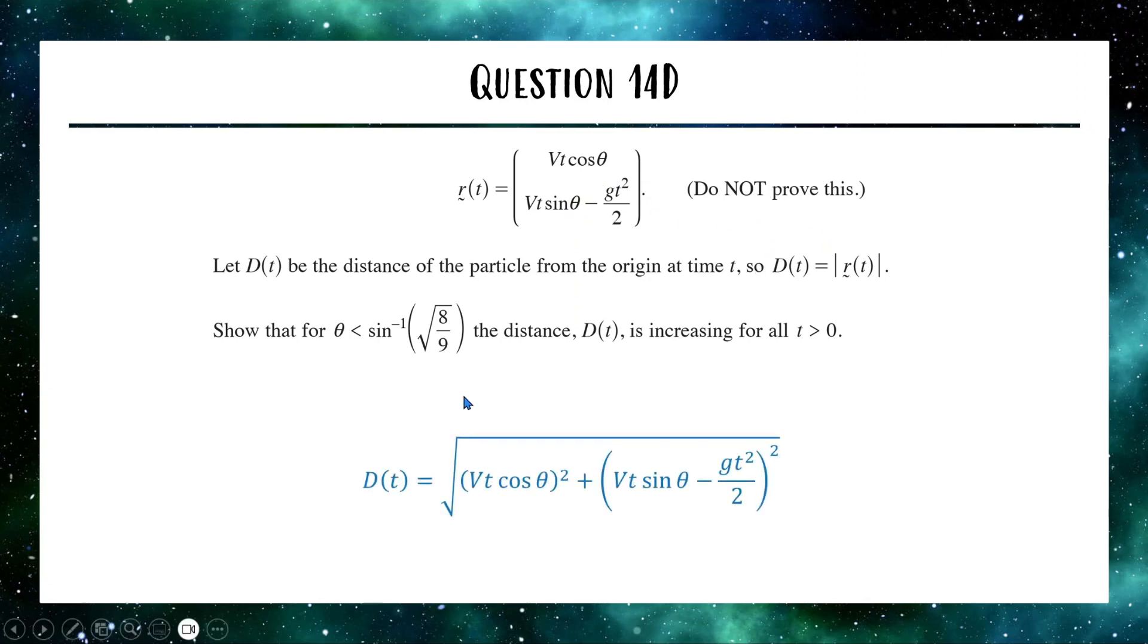So here is our distance calculation. Now the question says, show that this is increasing. The way we're going to do that is by using our first derivative. If you want to show something is increasing, you want to show that the first derivative is positive. So before we go anywhere, let's simplify our expression here for distance. And then when it's simplified a bit, we can start doing some calculus.